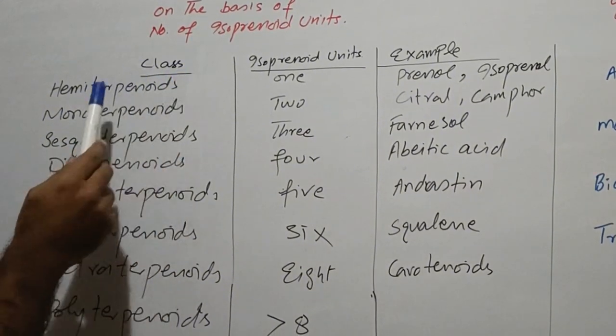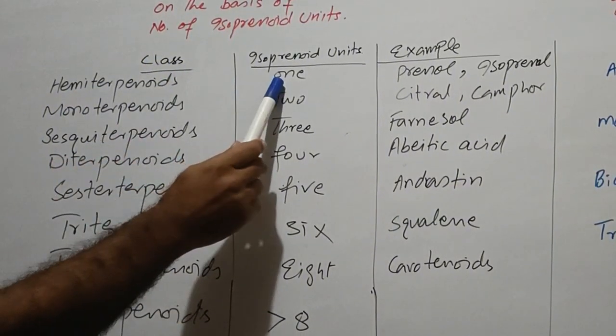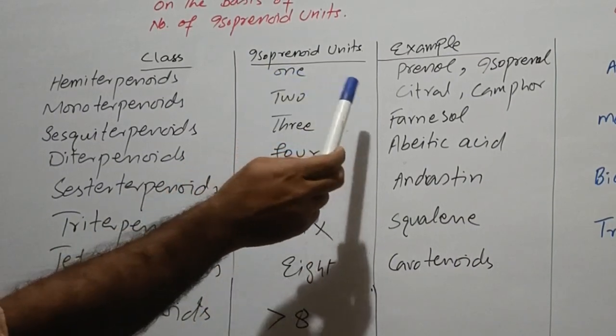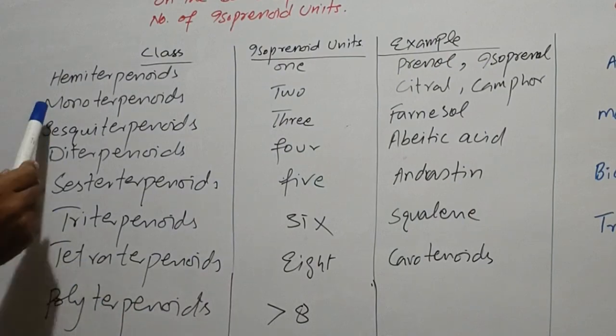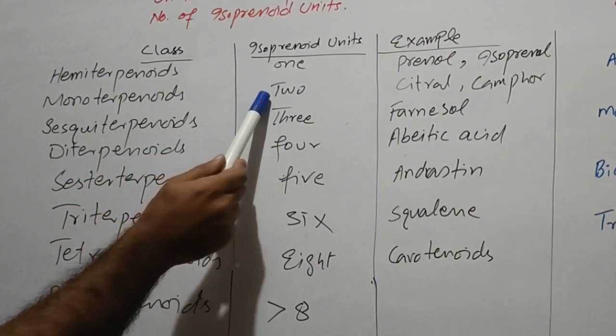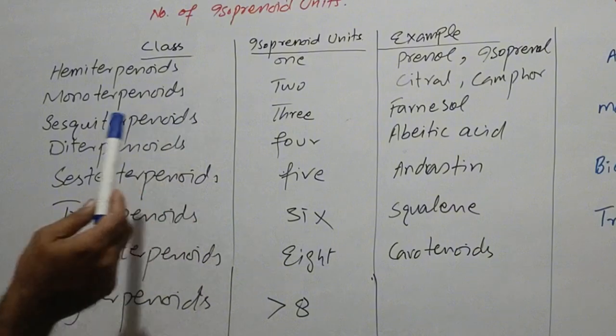First class is hemiterpenoids. These contain one isoprenoid unit and the examples include prenol, isoprenol. Monoterpenoids contain two units and the examples are citral, camphor.